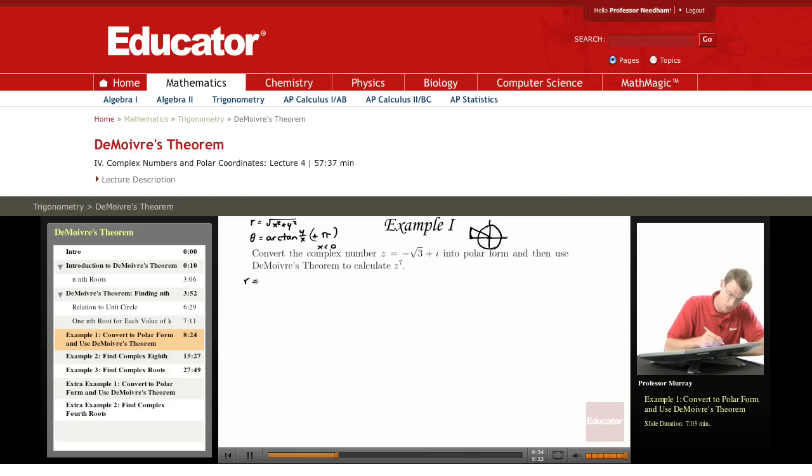R is the square root of x squared plus y squared, x squared is 3, y squared is 1, so square root of 4 is 2. Theta is arctangent of 1 over negative square root of 3, which is negative root 3 over 3. That's a common value, and so the arctangent of that is negative pi over 6.